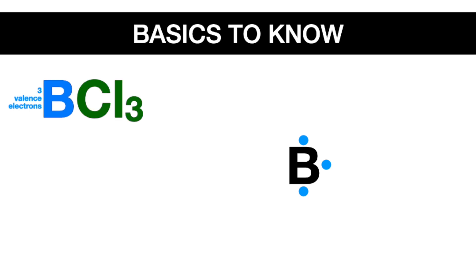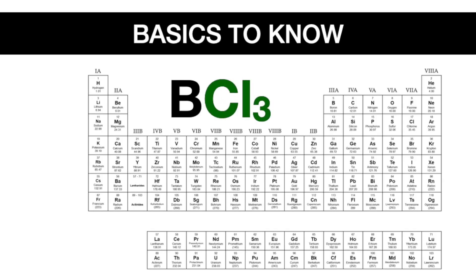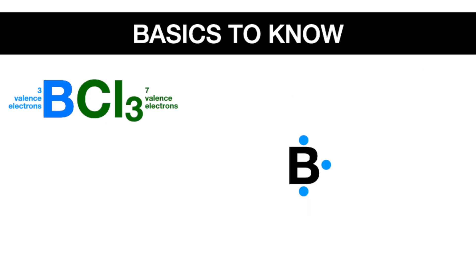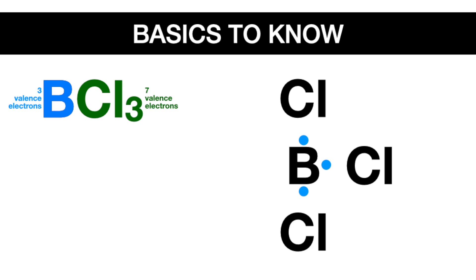Now let's look at the three chlorines attached to the boron. We'll have to figure out how many valence electrons a chlorine has by going to the periodic table, finding chlorine, and then counting from left to right in the same period or row until we get to chlorine. It has seven valence electrons. So we'll draw each of the three chlorines near the single electrons on the boron. Then to draw the seven valence electrons around each of the chlorines, envision that the chlorine chemical symbol has four sides to it. Then draw one electron near the single electron on the boron, and the rest of the electrons on the other three faces one by one until they start pairing up.